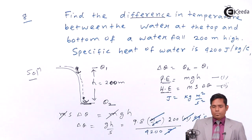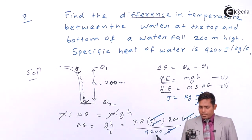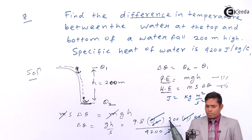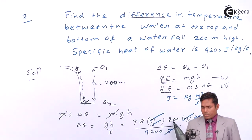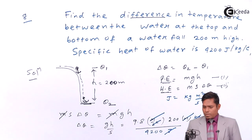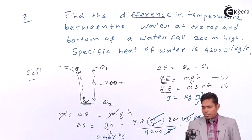So the answer will be in degree centigrade. Roughly, 9.8 into 200 is about 2000, divided by nearly 4000, gives about 0.5. But the actual answer is 0.467 degree centigrade. By solving precisely you will get this answer.